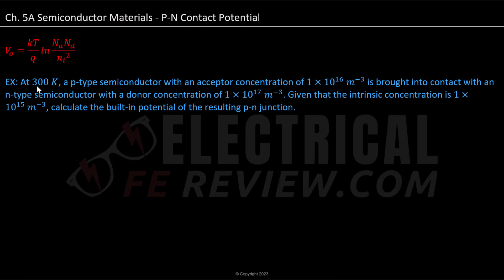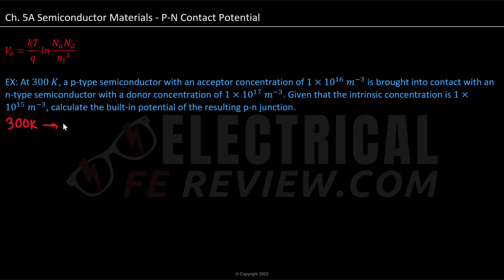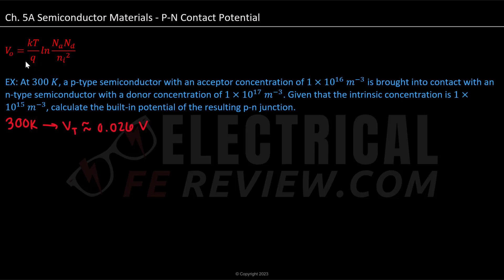Starting off, we can note that we have a temperature of 300 Kelvin, and because we are in thermal equilibrium, we know that our thermal voltage Vt is estimated to be 0.026 volts. We can replace the thermal voltage with this part of our formula.